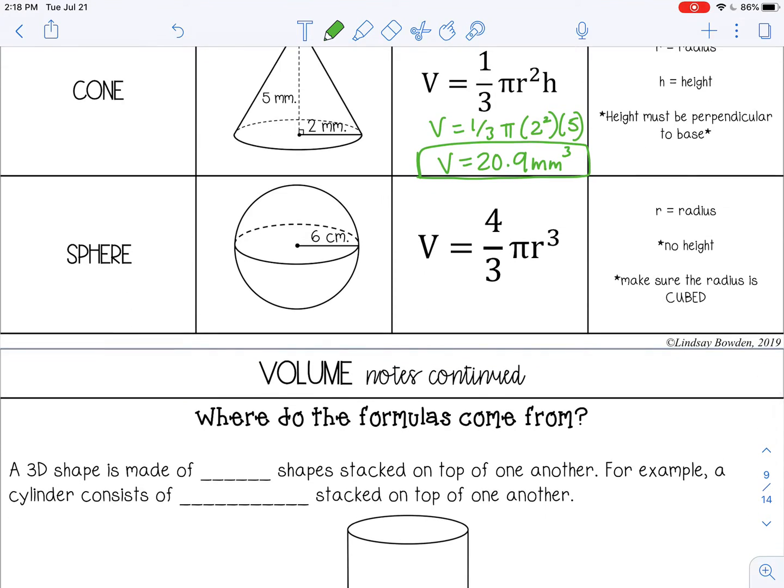And then the last one is a sphere. The only thing you will have for a sphere is the radius. It's the only variable. So 4 thirds pi 6 cubed. And I get about 904.8 centimeters cubed.